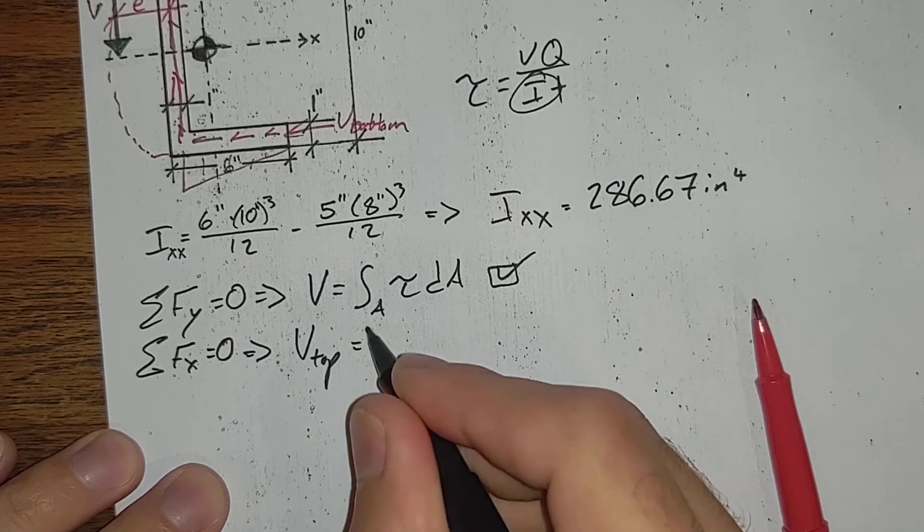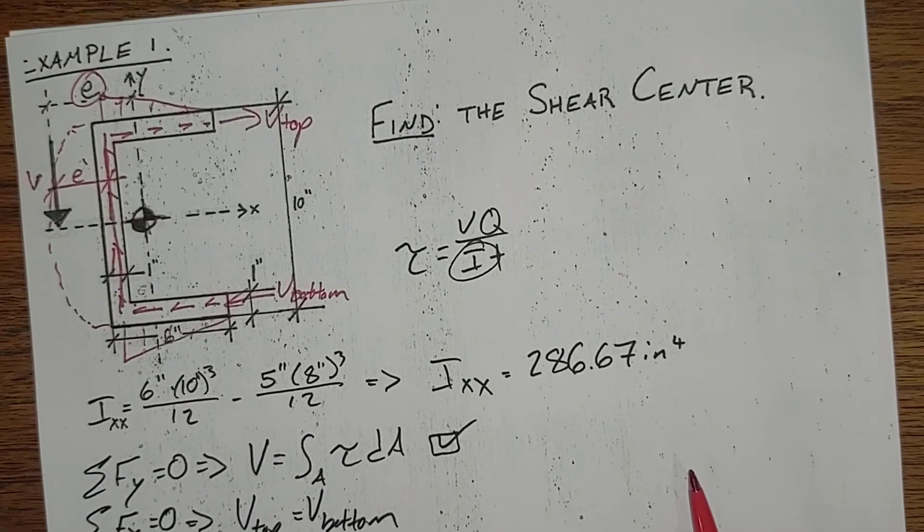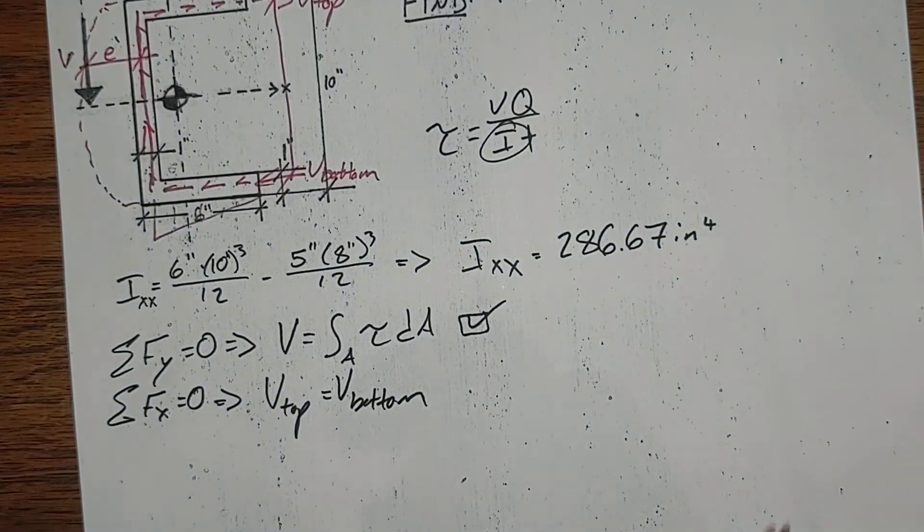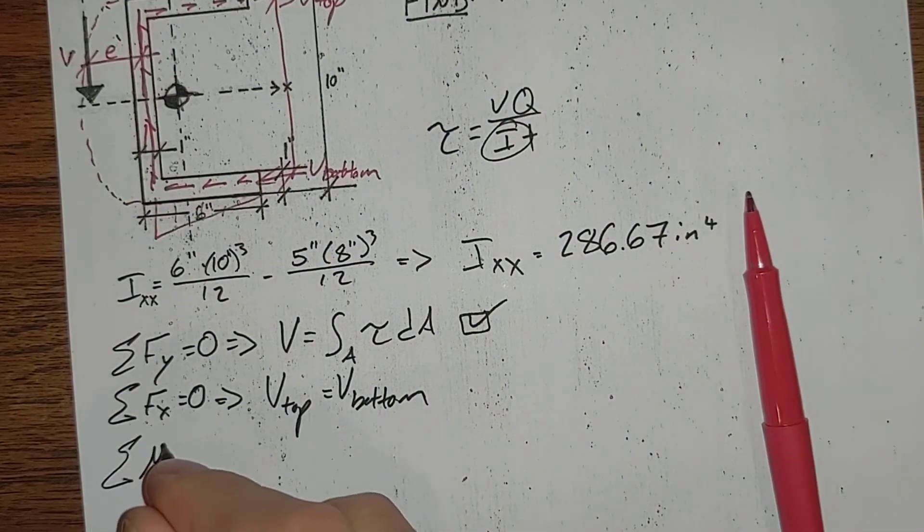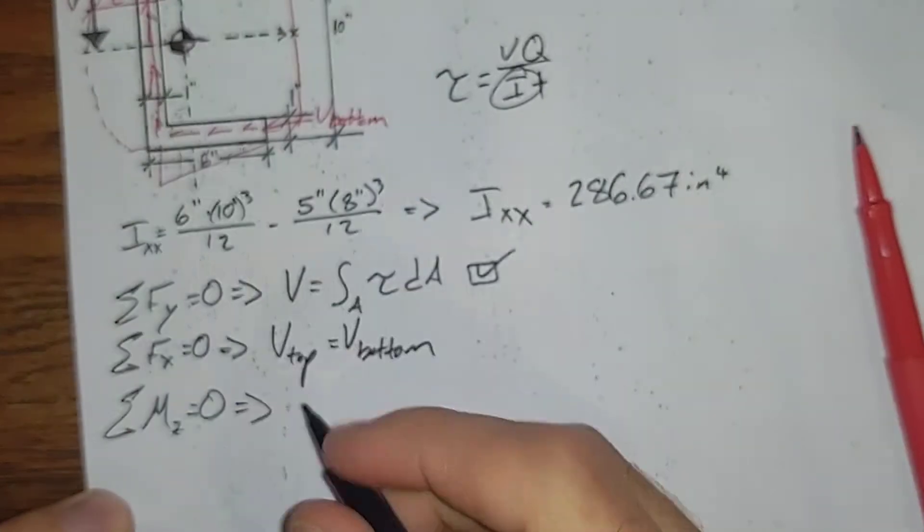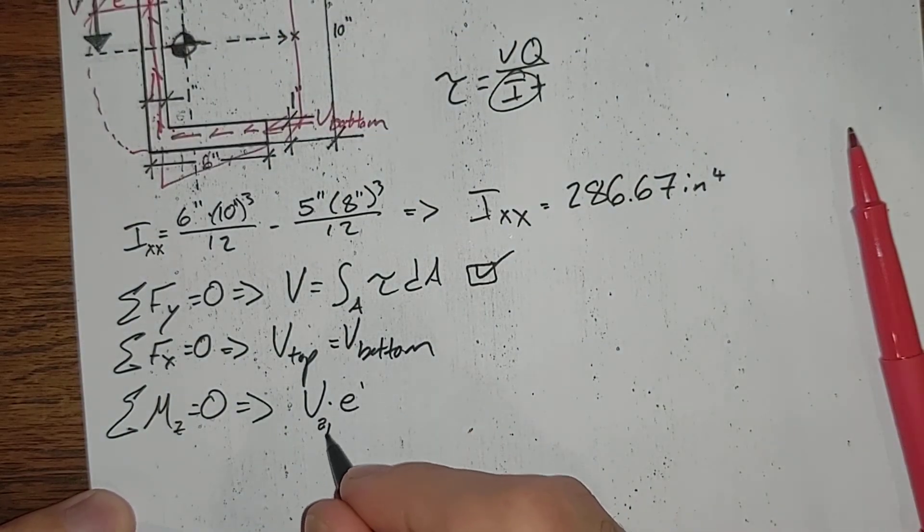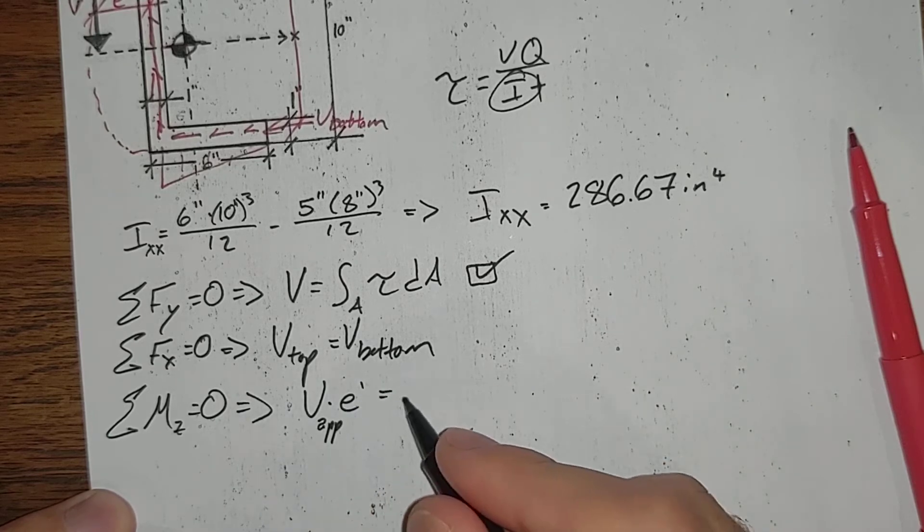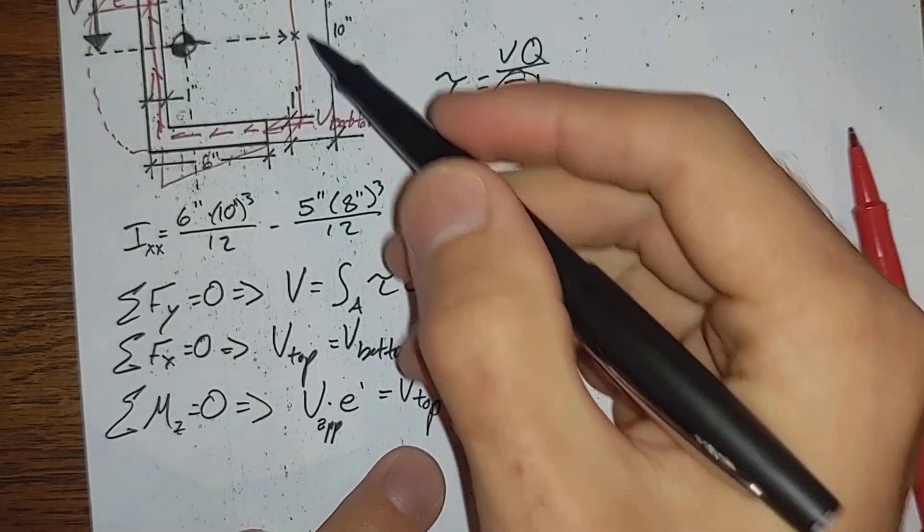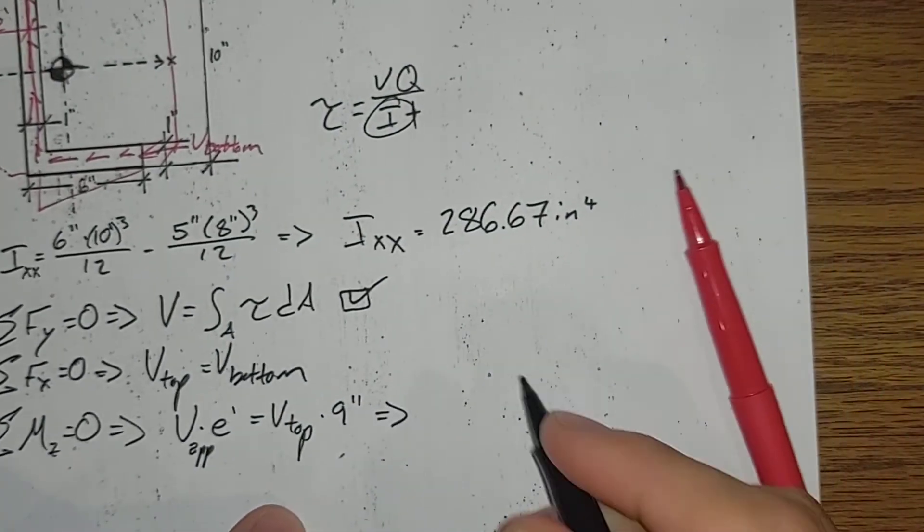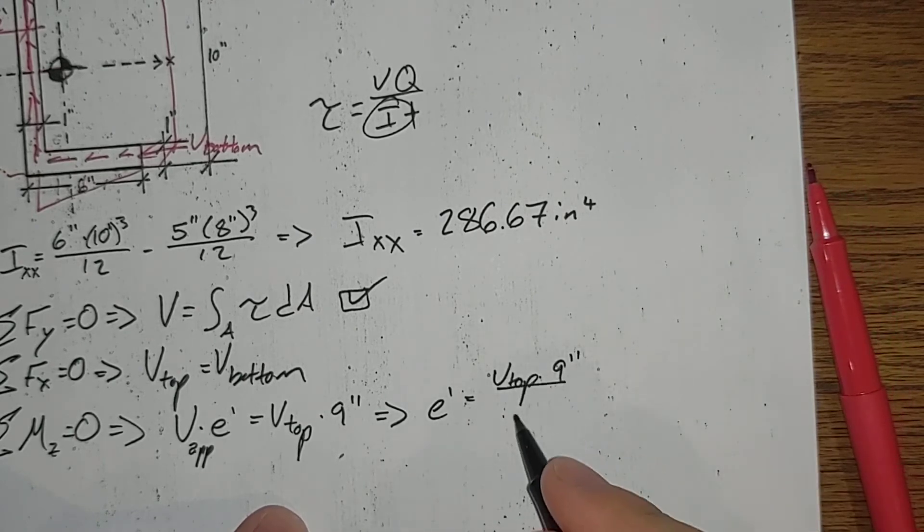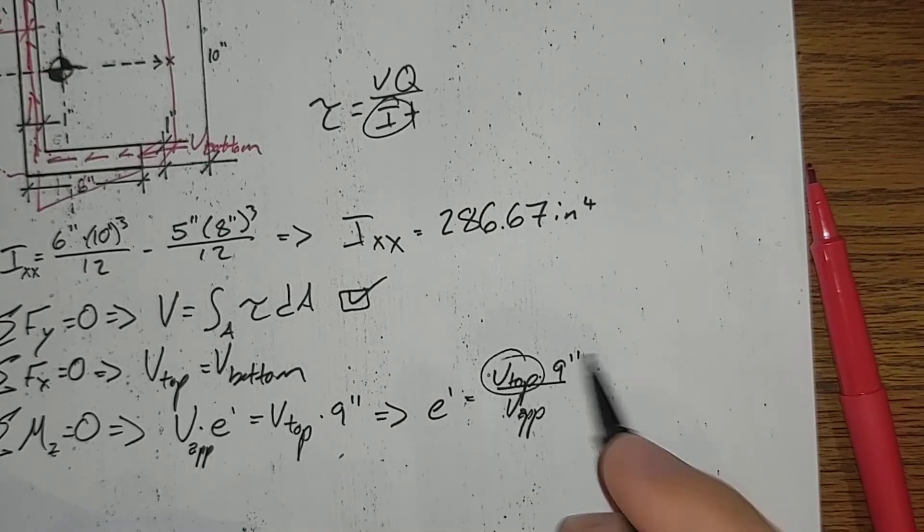V_top equals V_bottom, one to the right, one to the left. So that gives us a second couple here. The sum of moments about the Z axis equal to zero gives us V times E prime is equal to V_top times the distance between, which is 10 inches and a 1 inch thickness, so times 9 inches. E prime is equal to V_top times 9 inches divided by V applied. We need to find V_top.